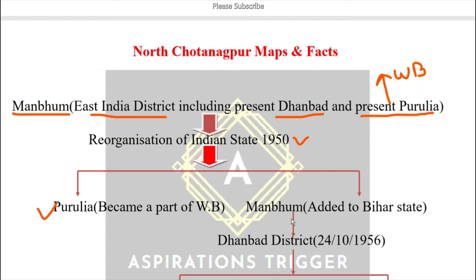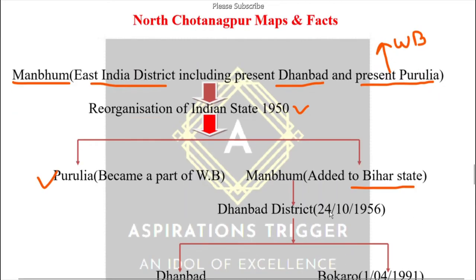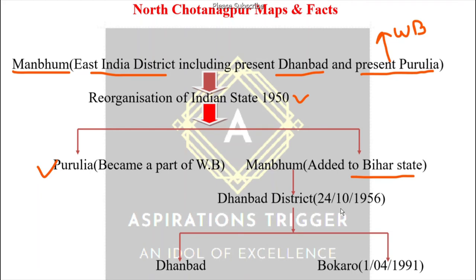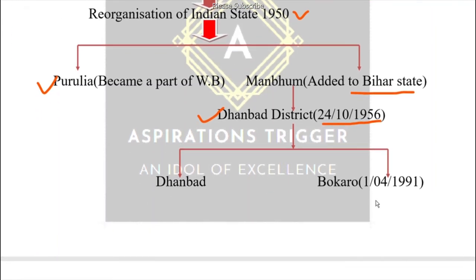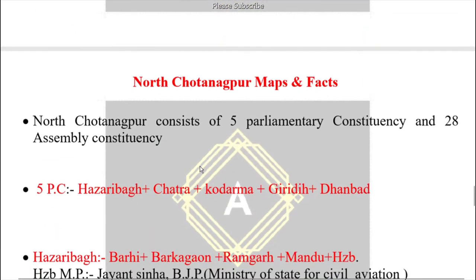In 1956, the Manbhum district was split: Purulia went to West Bengal, and the remaining Manbhum went to Bihar. Then Manbhum was made as a district — on 24th October 1956 Manbhum became a district under Bihar state. Then Dhanbad became a separate district, and in 1991 Bokaro was further separated from Dhanbad.